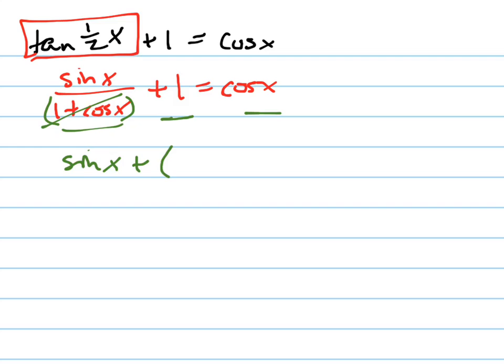That will give me sin(x), because those will cancel, plus 1 times 1 plus cos(x), which just looks like that, equals cos(x) times 1 plus cos(x).